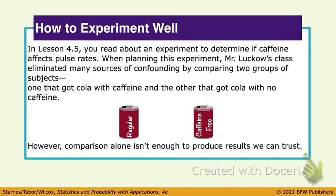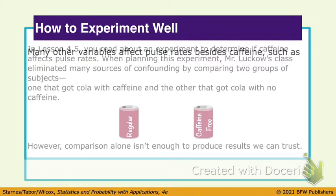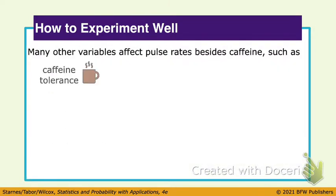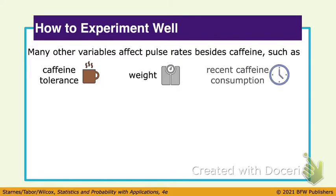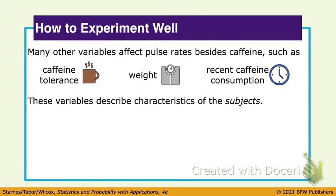But comparing them is not the only important thing. Many other variables affect pulse rates, such as your caffeine tolerance, your weight, and your recent caffeine consumption. What if some of these students already had caffeine — like coffee in the morning? These variables are talking about characteristics of the subject.